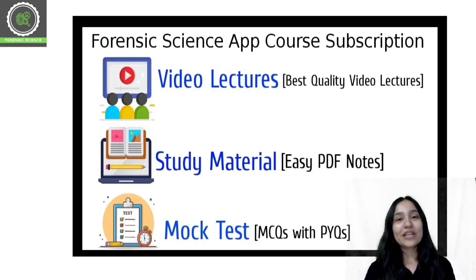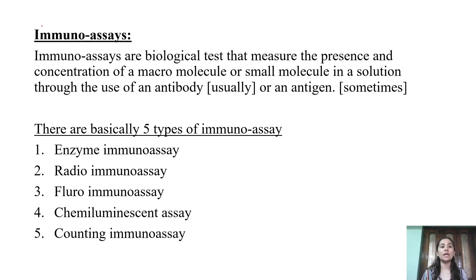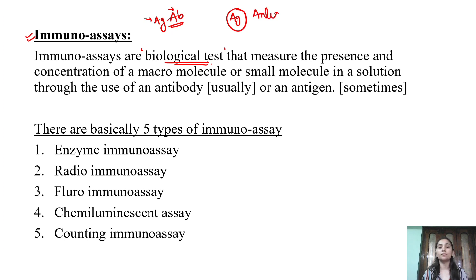What are immunoassays? Immunoassays are biological tests. They are biological tests because antigen-antibody (Ag-Ab) interaction and reaction are involved. Ag stands for antigen and Ab stands for antibody. Antigen-antibody interaction is the biological test that measures the presence and concentration of macromolecules in a biological sample.